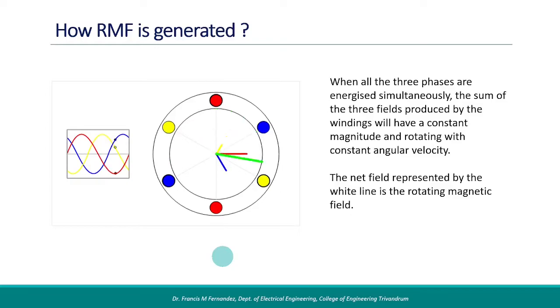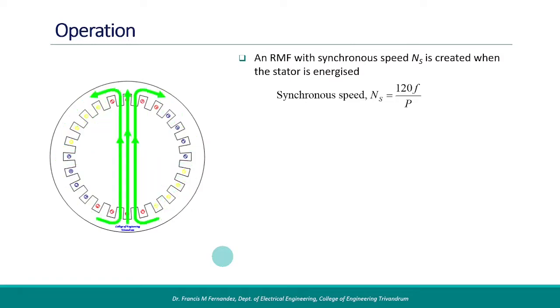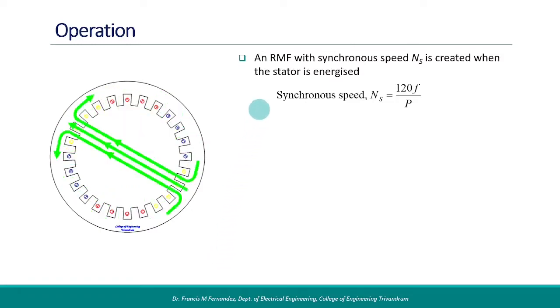If required, you may pause the video to have a closer look of the flux at different phase positions. Now we are seeing the sequence with a faster playback. So, when the stator winding is energized with a three-phase supply, a rotating magnetic field is generated.